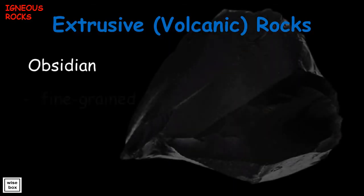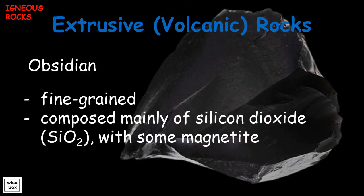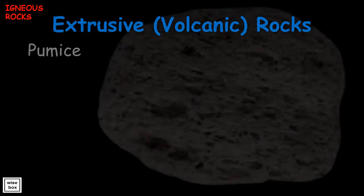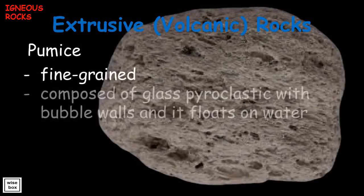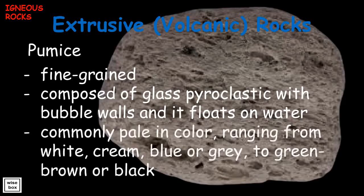Obsidian is a fine-grained volcanic rock composed mainly of silicon dioxide with some magnetite; it is usually dark brown to black in color. Pumice is a fine-grained extrusive rock composed of glass pyroclastic material with bubble walls, and it floats on water. It is commonly pale in color, ranging from white, cream, blue, or gray, to green, brown, or black.